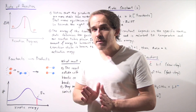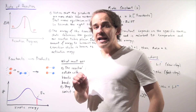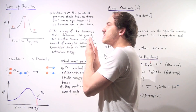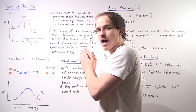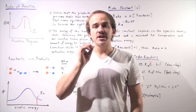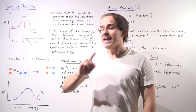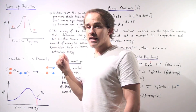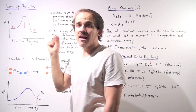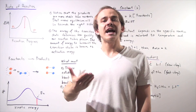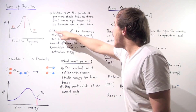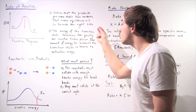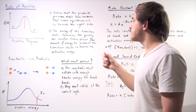If our products are more stable, that means our equilibrium will lie towards the more stable side, towards the product side. But the rate of the reaction is only related to the transition state. That transition state tells us how quickly our reaction will take place.